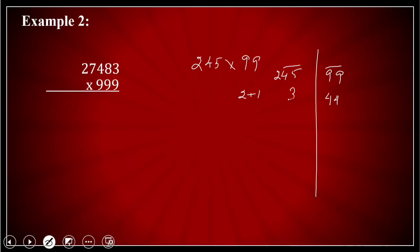I'll subtract this 3 and I'll subtract 44. 245 minus 3 is what? It is equal to 242 and 9 minus 4 is 5. 9 minus 4 is 5. So my answer for 245 into 99 comes out to be 24255. You can check it up. It is going to come out to be.